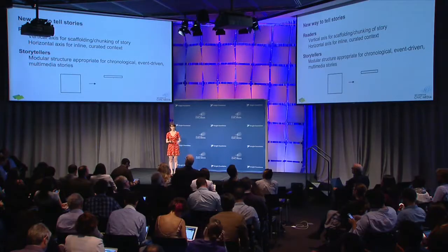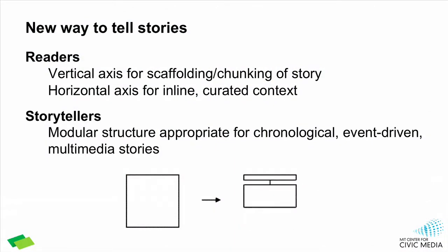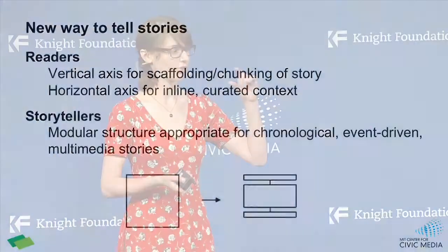Fold is what we consider a new way to tell stories by combining context with structure. For readers, that looks like a vertical axis for scaffolding and chunking a story, and each portion of the vertical axis has a horizontal axis that provides context from the storyteller — whether that's a journalist, a blogger, or any other kind of storyteller. For storytellers, it provides a modular structure that's appropriate for chronological, event-driven stories, or stories that require a lot of multimedia content to really understand.